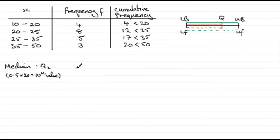So I'd mark up my class interval 20 to 25. So I've got my lower bound, my upper bound, as I had up here.